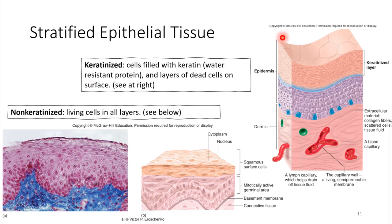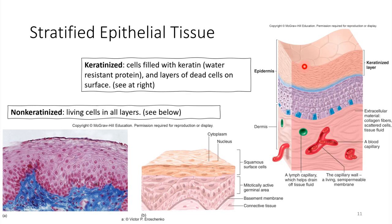Keratinized cells provide a very protective surface — not only with waterproofing, but remember, abrasions are happening on the surface of your skin all the time. Brush up against something and some cells will flake off. The skin gets renewed from the lower layers as cells divide and push up to replace themselves.